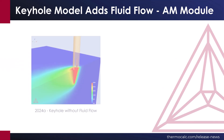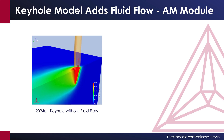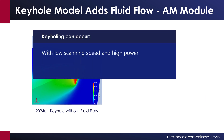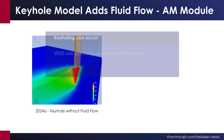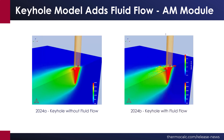The keyhole model was originally introduced last December in Thermo-Calc 2024A to improve on predicting the depth of the melt pool. Keyholing can occur with low scanning speed and high power. By adding fluid flow to the model, the program now offers more accurate predictions of the entire melt pool size, which is especially important at higher energy densities when Marangoni forces are strong.